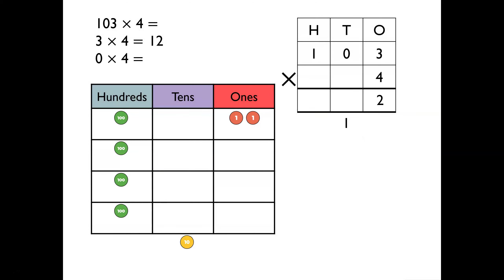In the tens column, we have no tens. 0 tens times 4 is equal to 0. But we must remember to add on the 1 ten that we made from the exchange. So we write that in the tens column. Finally, we have 100 multiplied by 4, which is 4 hundreds. And we write that in the hundreds column. 103 multiplied by 4 is equal to 412.